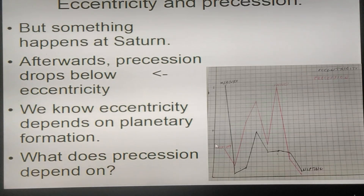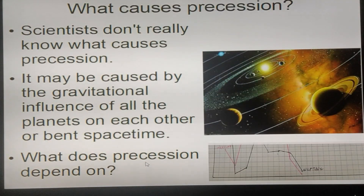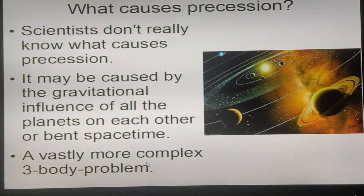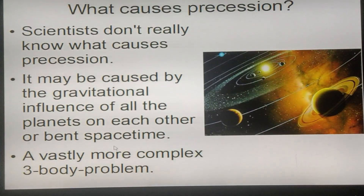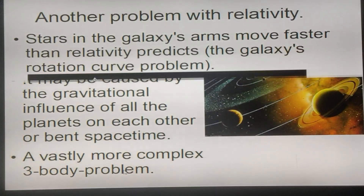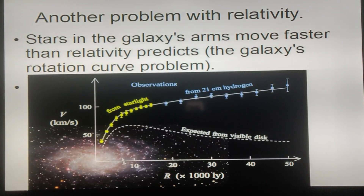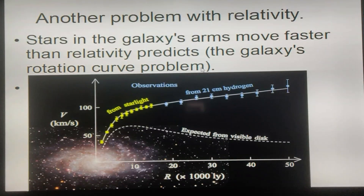We know what eccentricity depends on — it depends on planetary formation. But what does precession depend on? Scientists don't really know what causes precession. It may be caused by the gravitational influence of all the planets on each other, it could be bent spacetime, or it could be a vastly more complex three-body problem. And there's another problem with relativity: stars in the galaxy's arms move faster than predicted. It's called the galaxy's rotation curve problem.